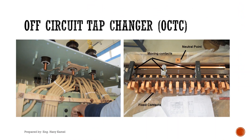The off-circuit tap changer. As in the picture, we can see a row of fifteen fixed taps, five taps per phase, and a sliding bar with three moving contacts, one per phase. Finally, the three phases are connected in one bus bar, providing a neutral point. As the tap changer in our example is a four-star winding application.